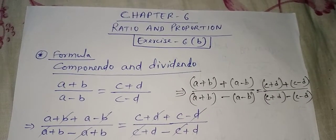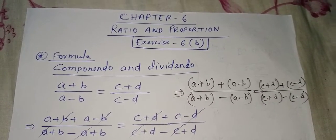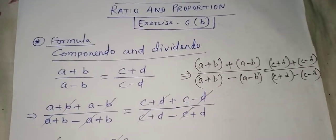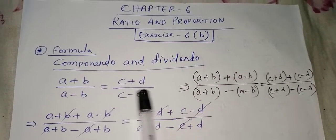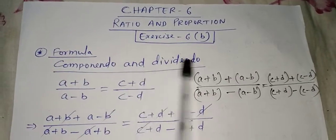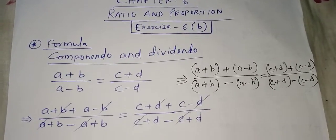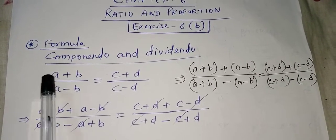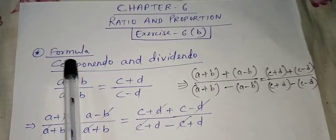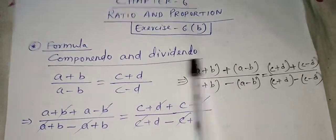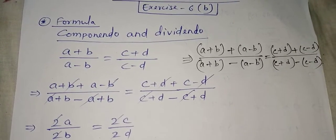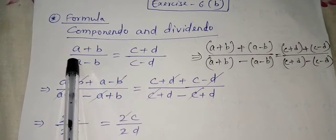Class 10 children, today we will learn a new chapter — Chapter 6: Ratio and Proportion. To learn this chapter, we should know a formula called componendo and dividendo. First, I will explain what componendo and dividendo means and how to apply it, and then I will teach you one question using this formula. Let us begin.